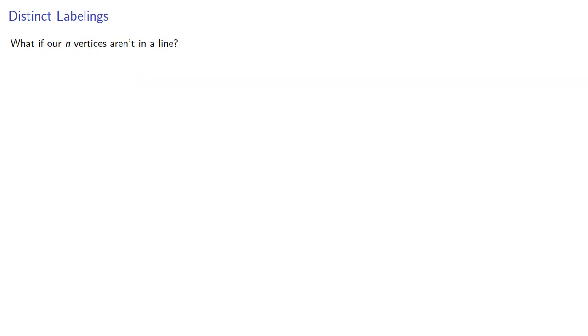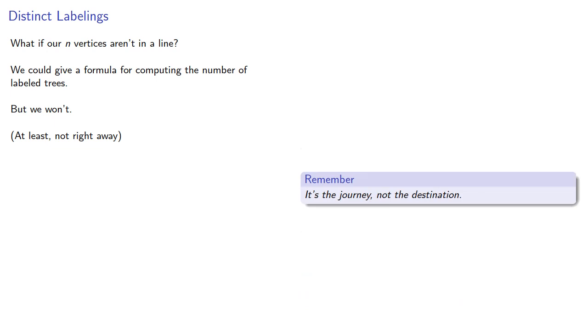What if our n vertices aren't in a line? We could give a formula for computing the number of labeled trees. But we won't. At least not right away. Remember, it's the journey, not the destination.